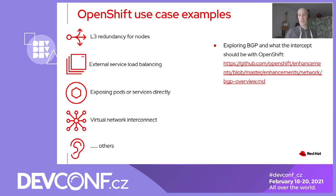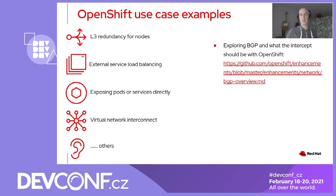Here are some of those use cases. For L3 redundancy for nodes, we can use BGP to help distribute routes to nodes so that nodes can determine what their next hop is — that could be used for load balancing or redundancy purposes, and we could have multiple routes out from the node. We can also use BGP as a way to load balance traffic between services in an OpenShift cluster. Typically in OpenShift you need to use an external load balancer for that, and maybe BGP could be a means of doing so. Also for exposing pods or services directly: when a pod or service is made available in the cluster, we can use BGP to publish an IP address and a route to the rest of the network for that pod or service.